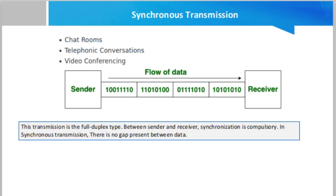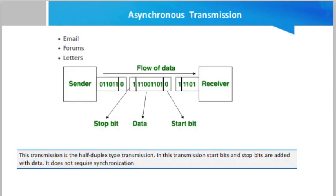Now if you talk about asynchronous transmission, data is sent in form of byte or character. This transmission is the half duplex type transmission. In this transmission, start bits and stop bits are added with data.